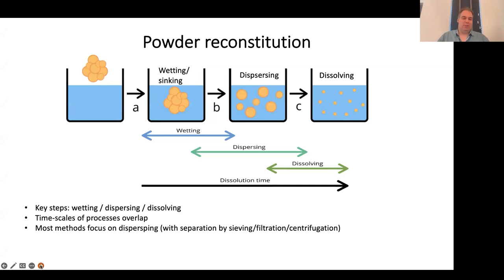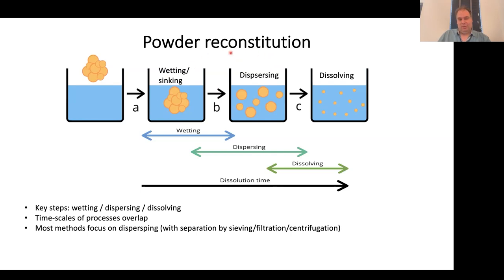When looking at powder solubility and powder reconstitution, the first thing we really have to do is distinguish what we're actually studying. What we typically see are three different stages in the process: we have a powder that we put into water, we start first with wetting and sinking of the powder, and then we get to dispersing of the powder, where agglomerates fall apart into individual powder particles.